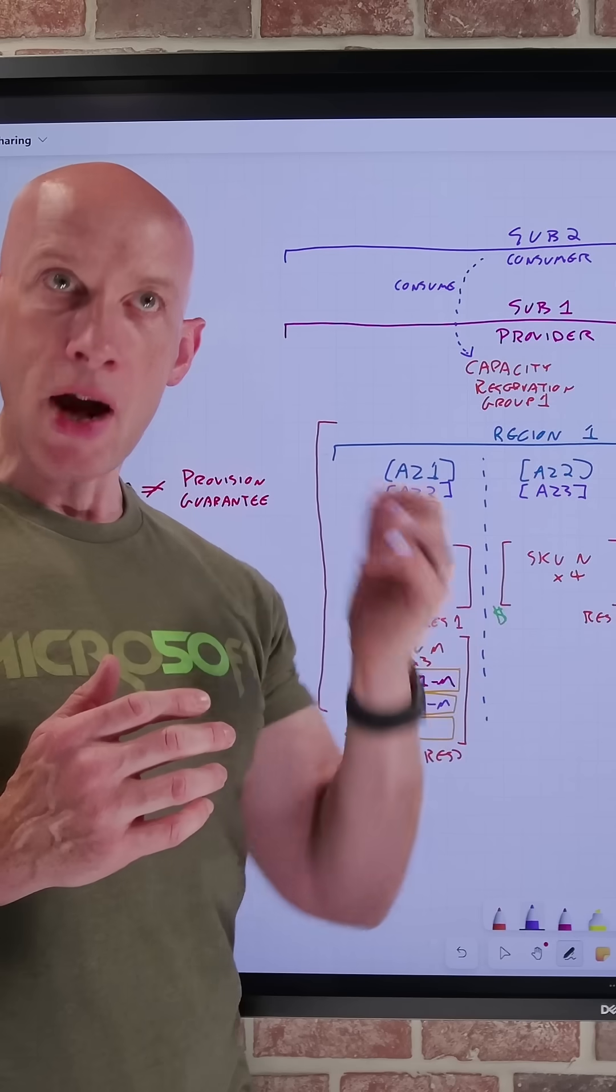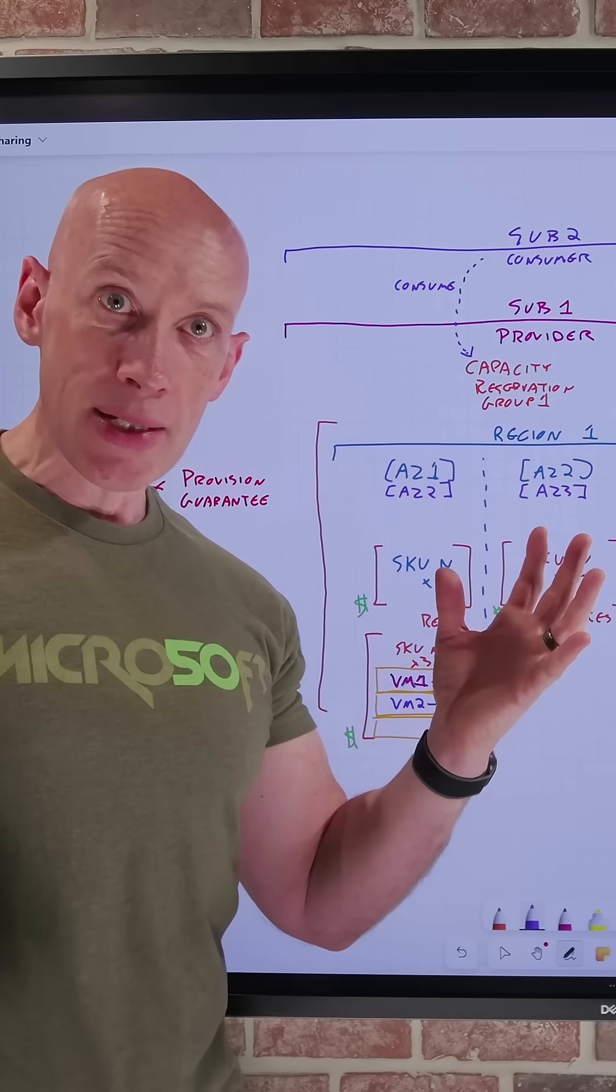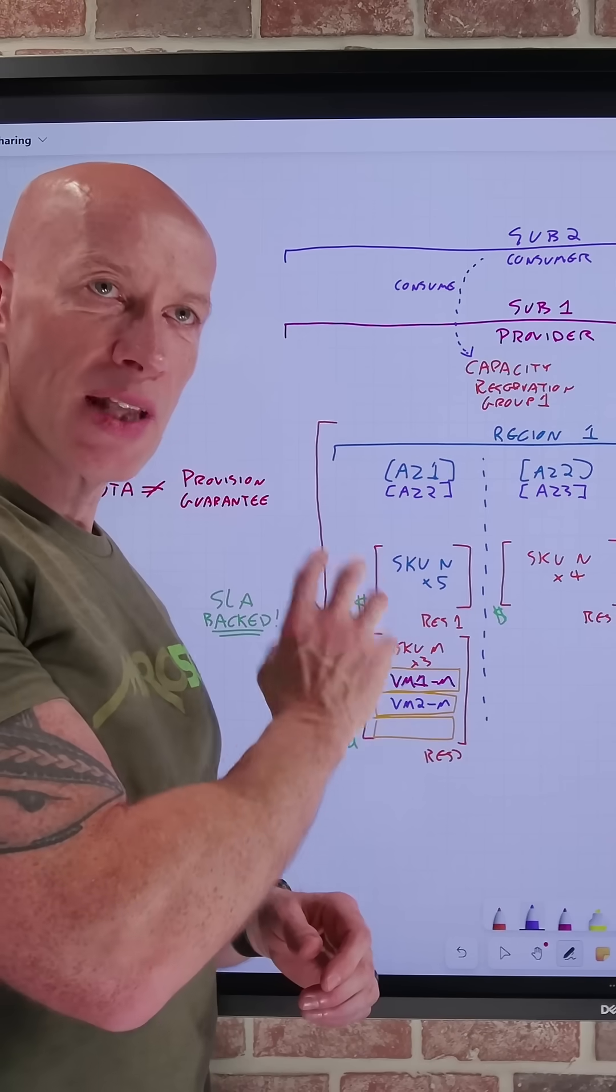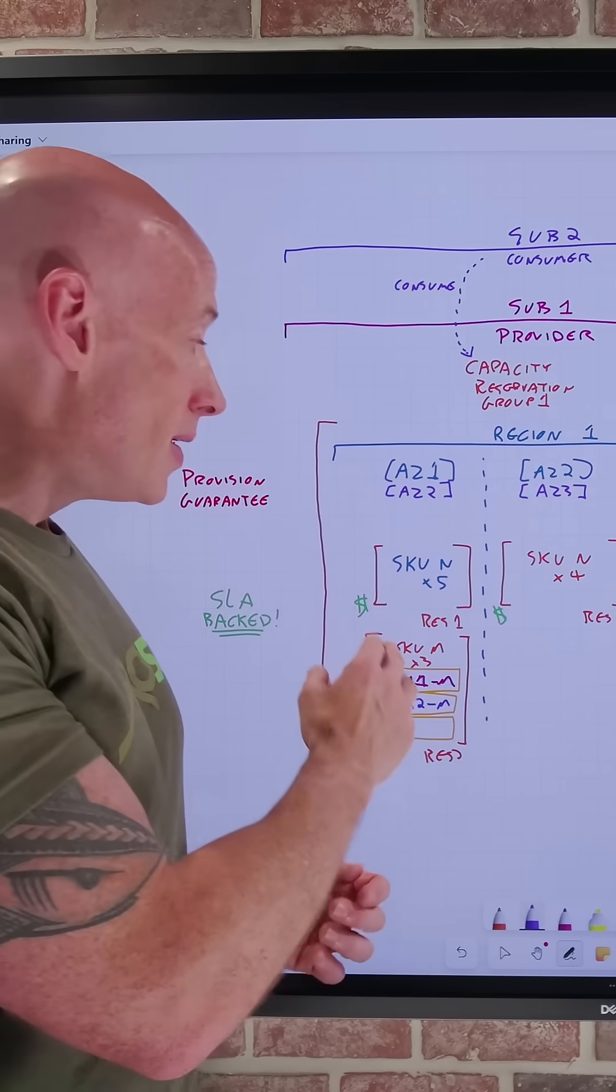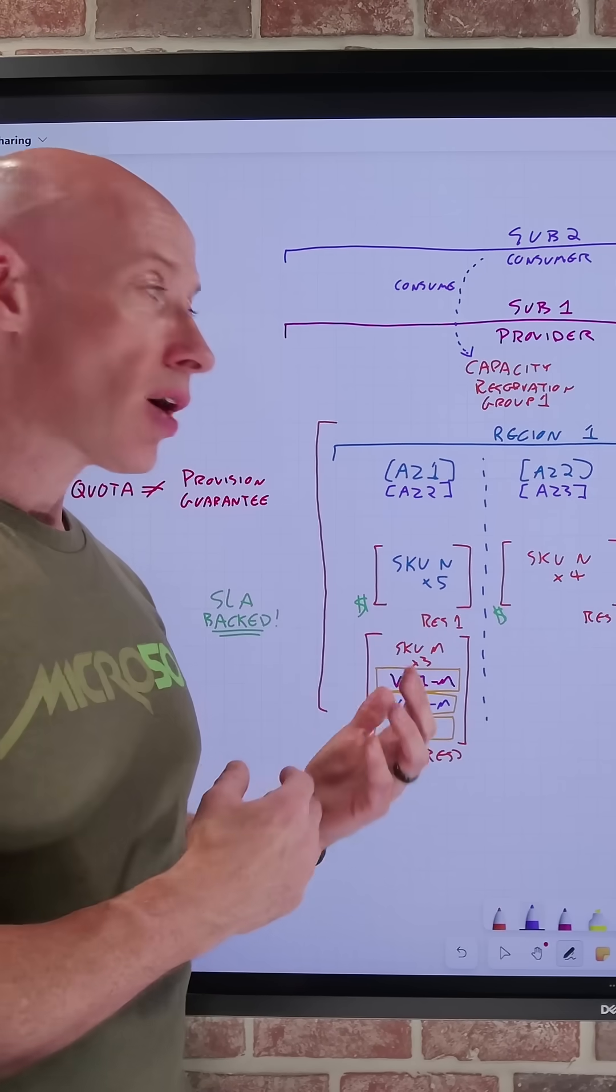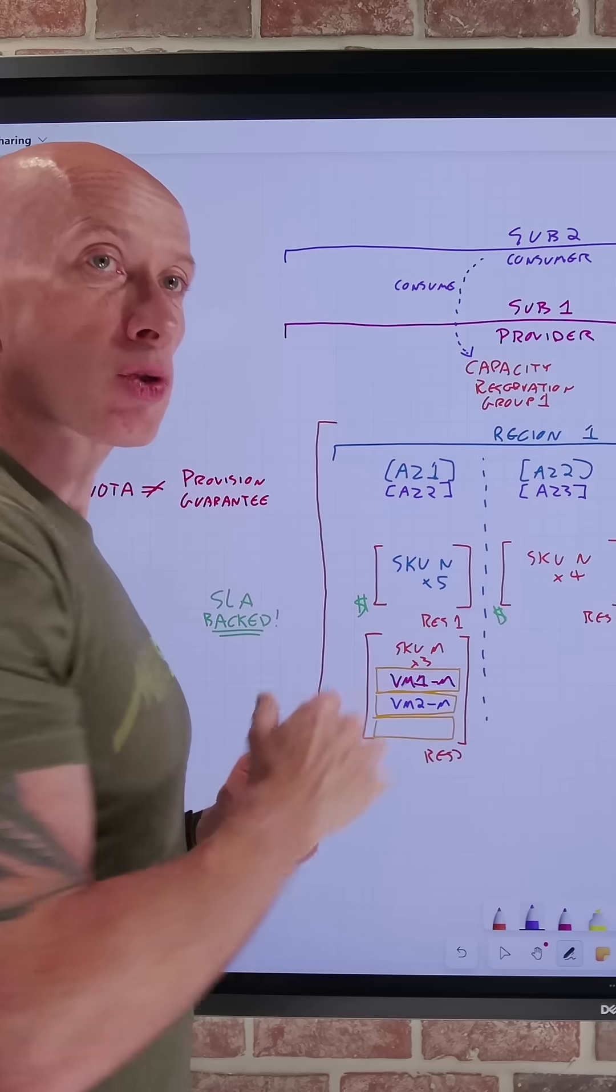But if there's a rainy day, if there's a huge burst need in my scaling, I can deprovision those lower priority workloads, those dev tests, and know the capacity is available and just scale up or provision into my more critical workload, either in the provider or in another subscription.